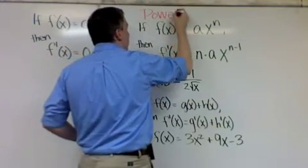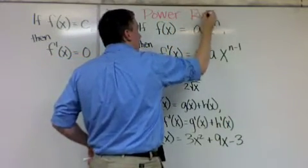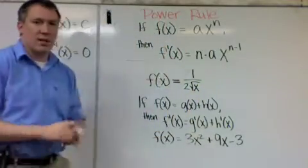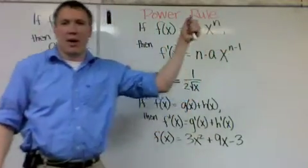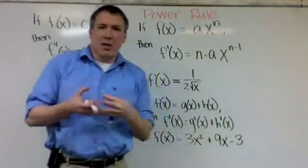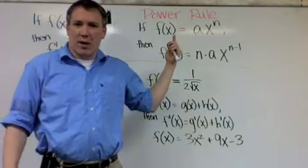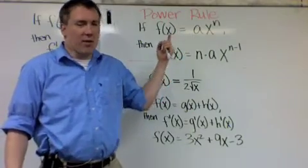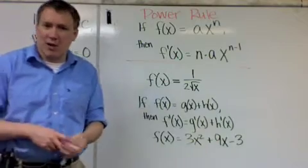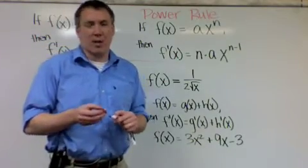It's called the power rule because it is a simple way of finding the derivative of something that is raised to a power. So in this case, x is raised to some power n, and the a in front is again just a number. Any number except for the variable here—the function will tell you a variable. Here's f of x. If it was f of t, t is a variable. Everything else is a coefficient or just a number.